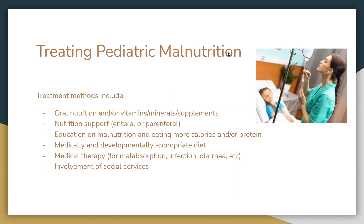Now we're going to talk about treating pediatric malnutrition. Some treatment methods include oral nutrition — eating more food — or vitamin and mineral supplements if you're missing certain vitamins, minerals, or nutrients. There's also nutrition support, which could be enteral or parenteral. Enteral is tube feeding that goes directly to the stomach or small intestine, and parenteral is through the veins. Both are substitutions for normal eating through the mouth when that option is not available.